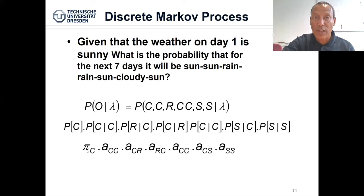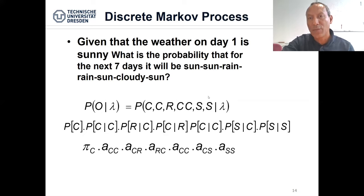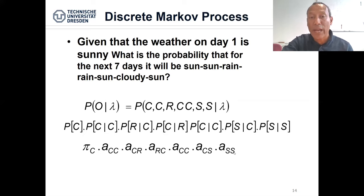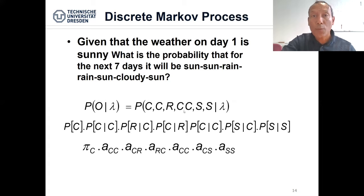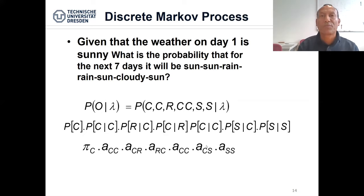The first state is cloudy, so we take the initial probability π_c. Then there is a transition from cloud to cloud, cloud to rain, rain to cloud, cloud to cloud, cloud to sun, and sun to sun. These are the transition probabilities, and by multiplying all of them — the reason we multiply is that we are dealing with a sequence of observations in this order.